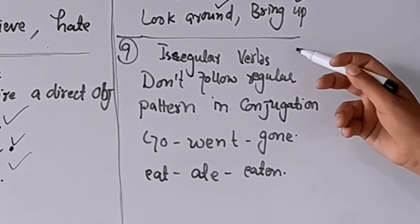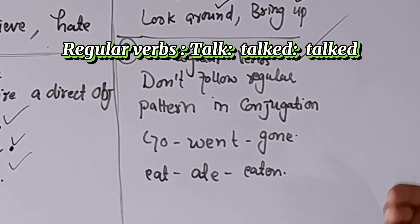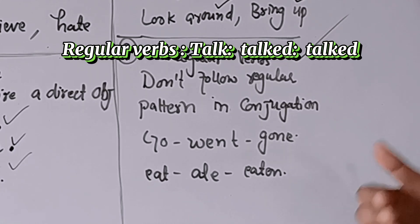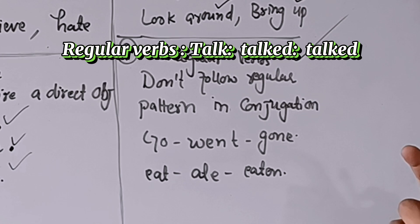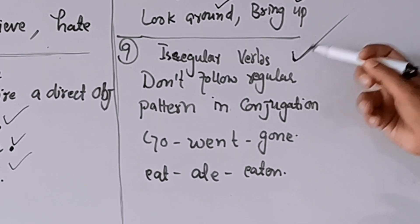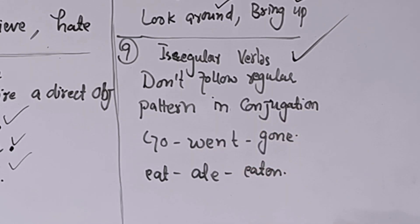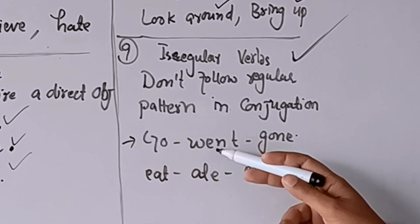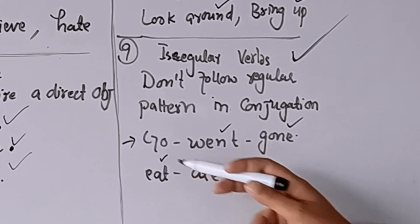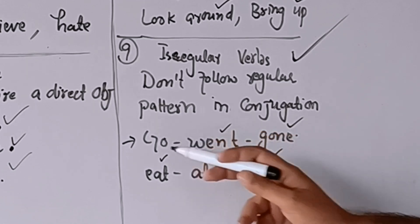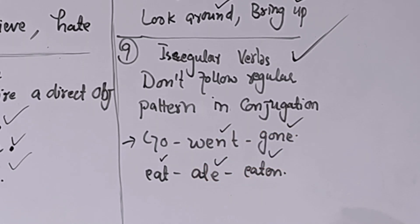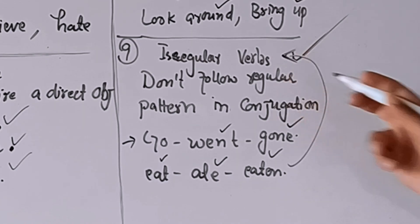Regular verbs are those verbs whose second and third forms can be formed by adding -ed — for example: talk/talked/talked, walk/walked/walked۔ Irregular verbs do not follow the regular pattern of conjugation — جیسے 'go' کا second form 'went' اور third form 'gone' ہے، اسی طرح 'eat/ate/eaten'۔ Irregular verbs کی first، second اور third forms normally ایک دوسرے سے different ہوتی ہیں، اسی لئے انہیں irregular verbs کہتے ہیں۔